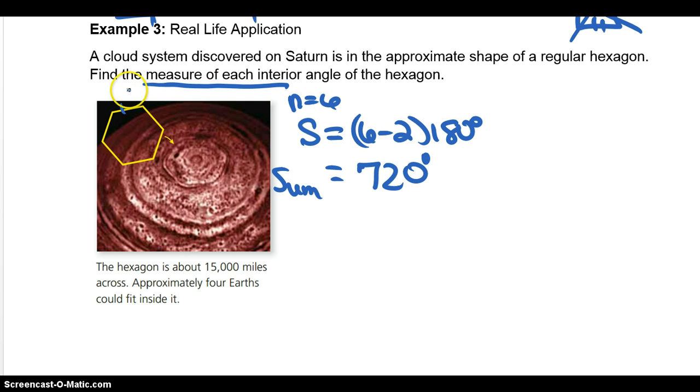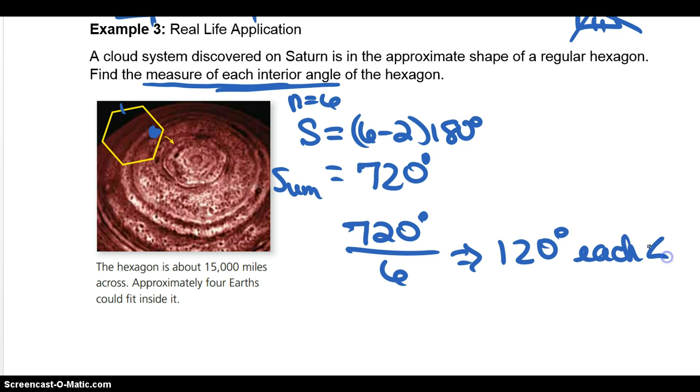But it didn't ask me that. It said find the measure of each interior angle. So how do I find this particular angle right here? I would take the sum, 720, and divide it, because it's divided evenly in this regular hexagon, I would divide it by six. And that gives me 120 degrees for each angle. So 120 degrees is the answer.